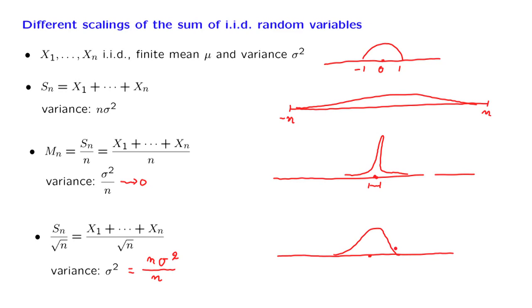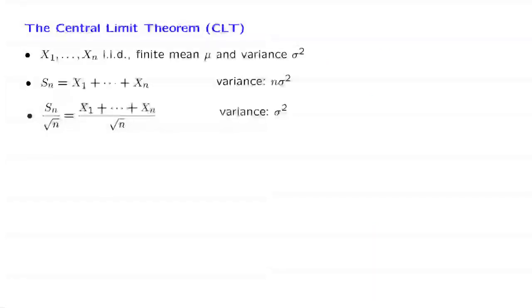The central limit theorem will give us the answers to these questions. The setting for the central limit theorem will be pretty much the setting that we were just discussing. So we will be looking into the case where we divide the sum of the random variables by square root of n, except for a few additional twists.